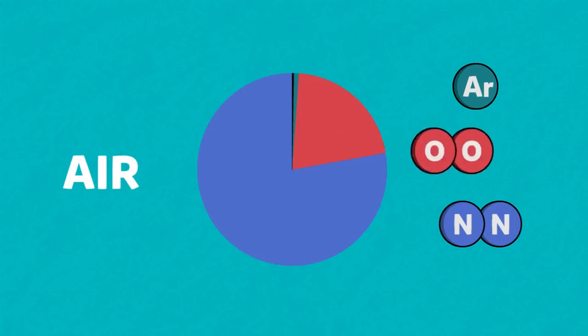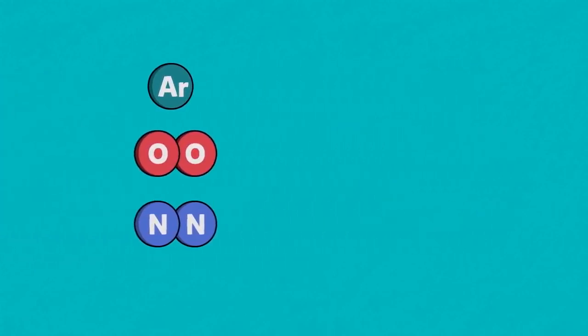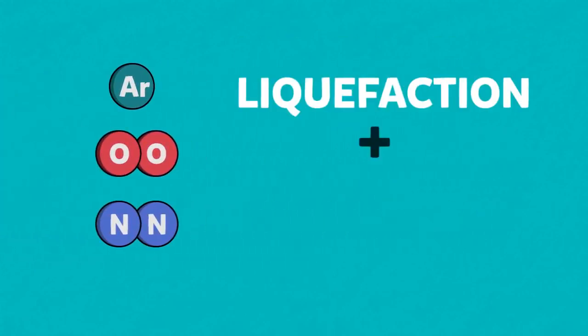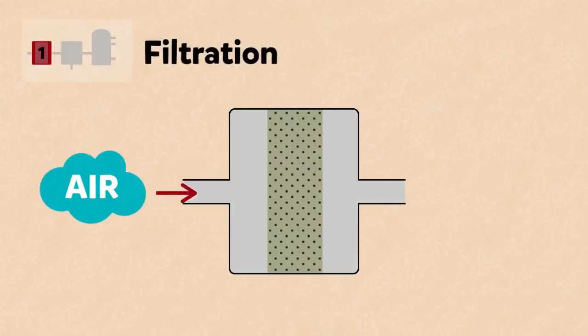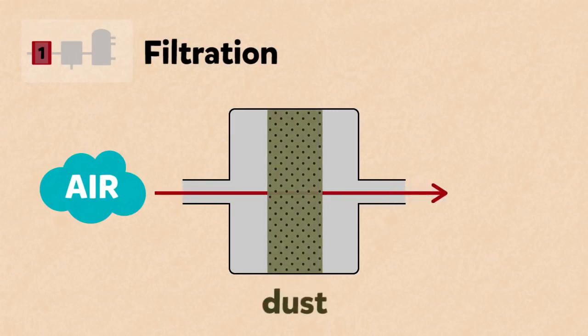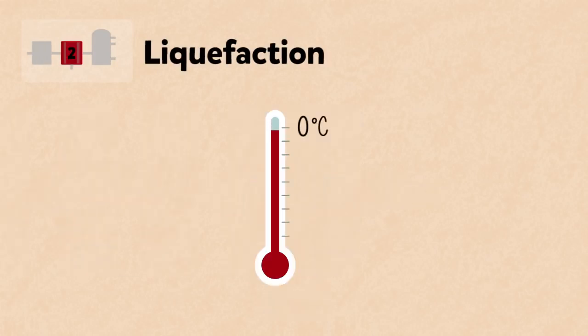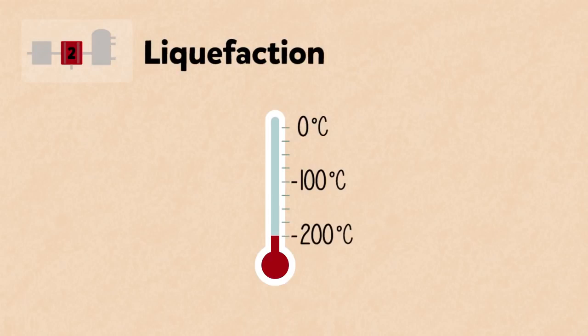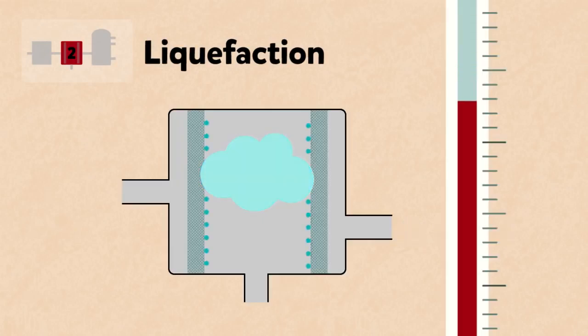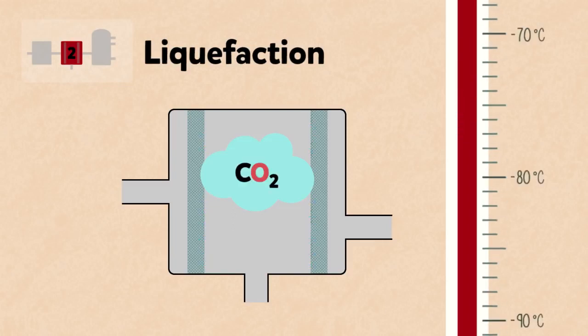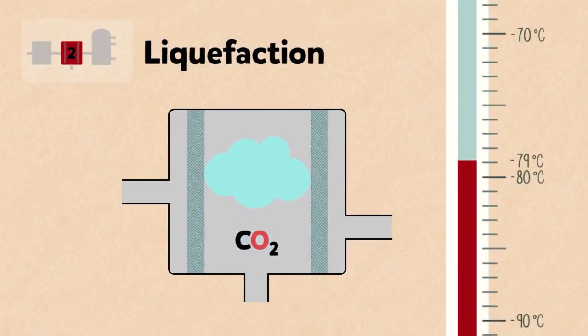Nitrogen, argon and oxygen can be separated from the air by liquefaction followed by fractional distillation. Firstly, the air is filtered to remove dust. It is then cooled in stages to minus 200 degrees Celsius, at which temperature air is a liquid. As it is cooled, water vapour condenses and is removed by absorbent filters.